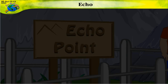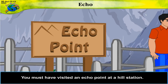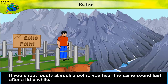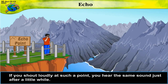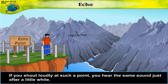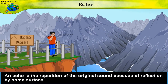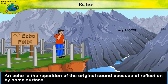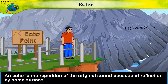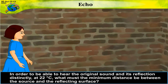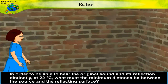You must have visited an echo point at a hill station. If you shout loudly at such a point, you hear the same sound just after a little while. This sound is called an echo. An echo is the repetition of the original sound because of reflection by some surface.